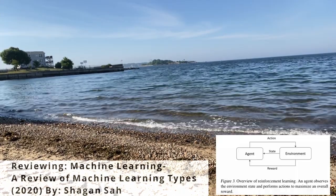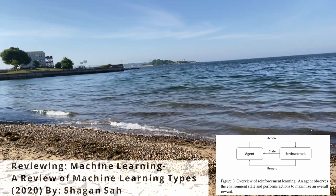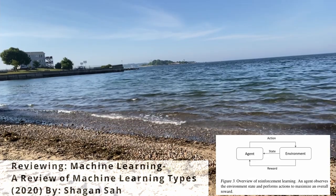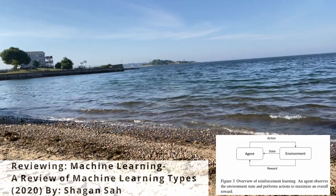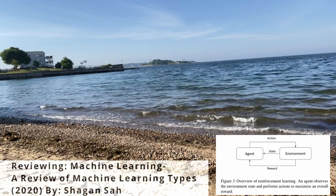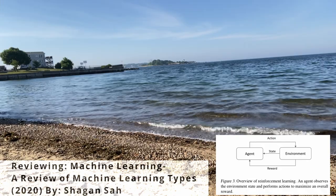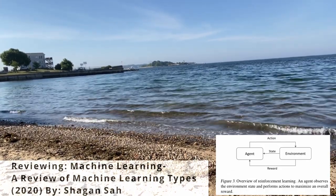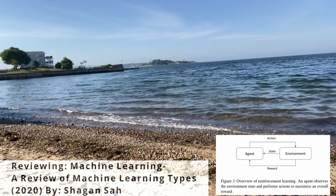Then we have reinforced learning. Reinforced learning can sometimes be supervised or a hybrid where the information is given to the computer. So let's say how to win a chess game — you program what those success criteria are and the machine continuously tries to improve on its own learning to achieve that goal.